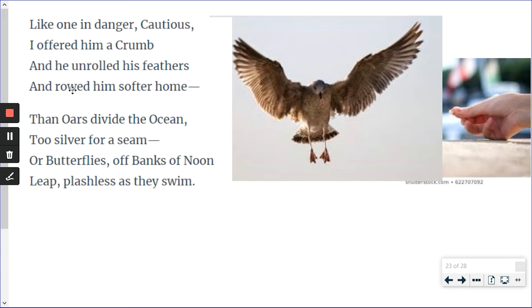And here, instead of saying spread his wings and flies, it just says, and rode him softer home. Then oars divide the ocean to silver for a seam. In other words, is he flying in the ocean? No. He's flying in the sky. But the sky and the ocean are very similar. They go on for a long time. And here it just throws in butterflies. Butterflies fly in the sky too and are splashless as they swim. They're flying through the sky. They're not really swimming.